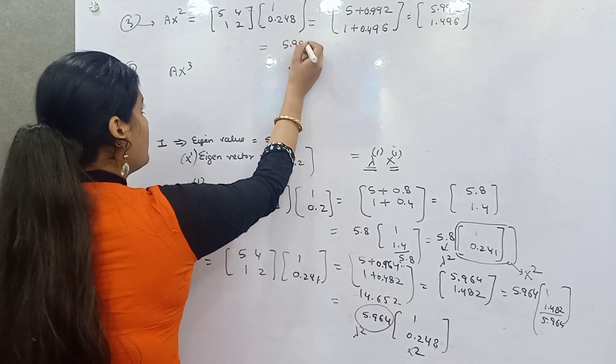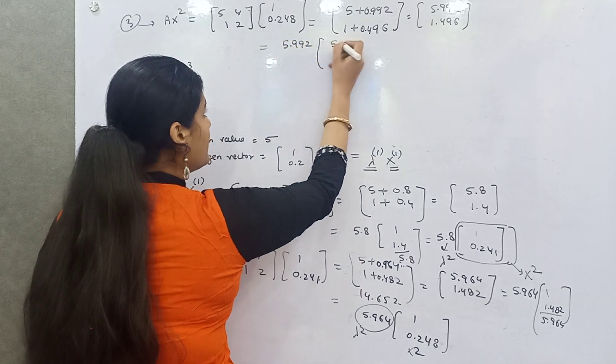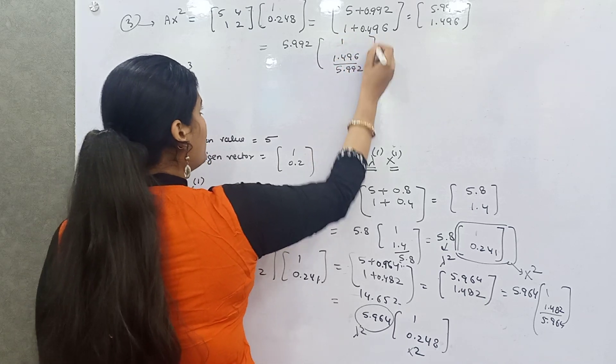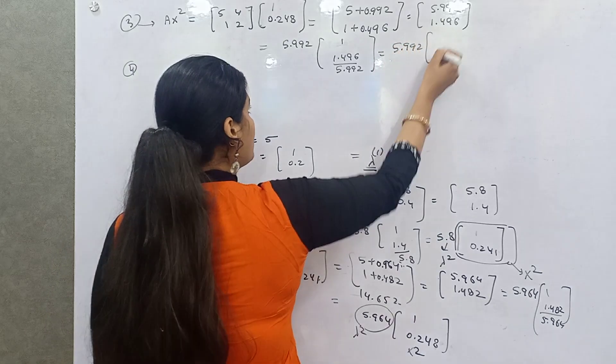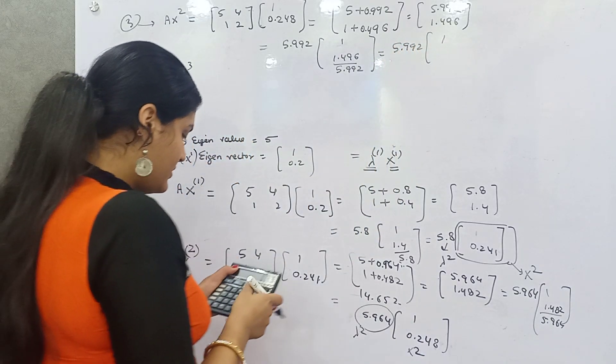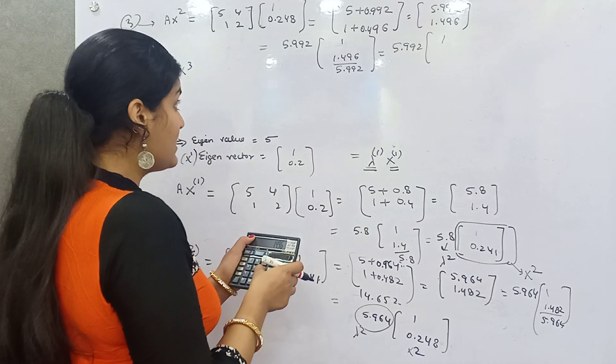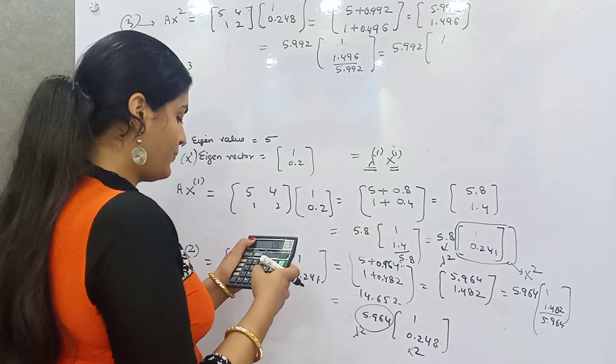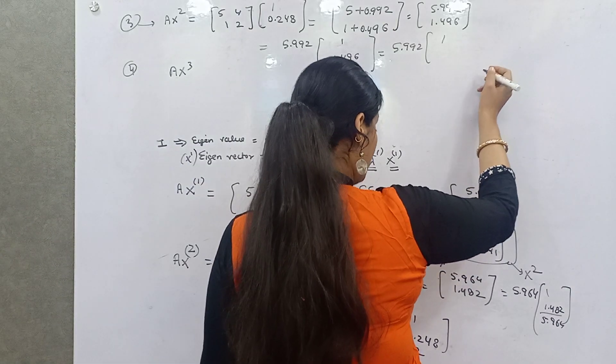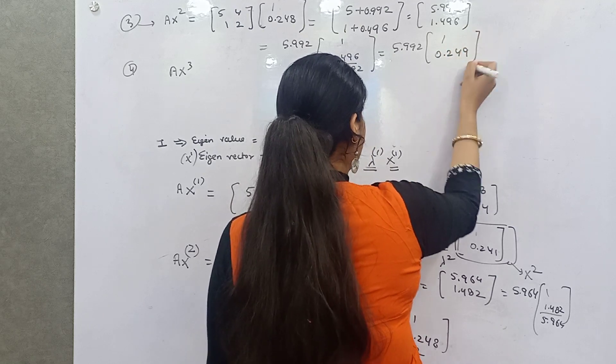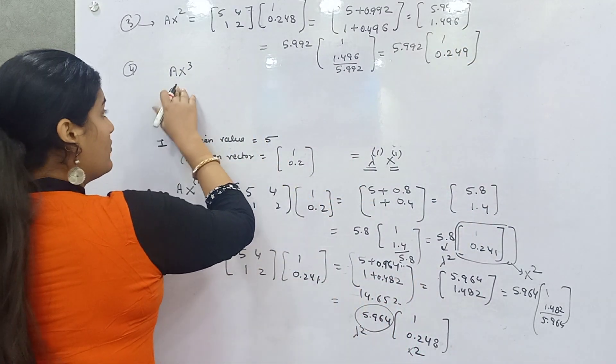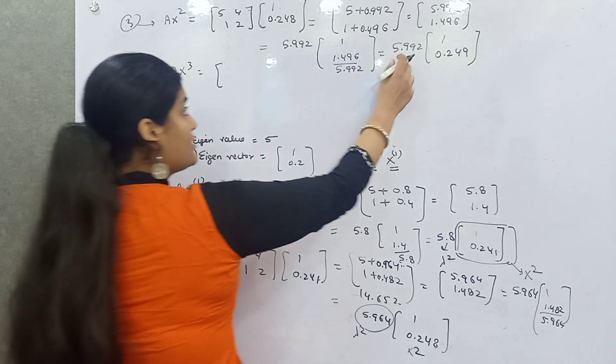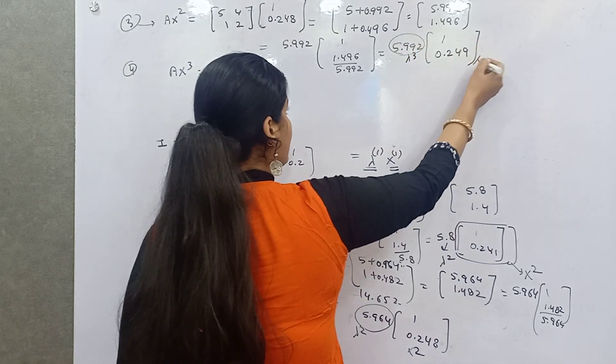Again, take common the first element. This will be 1 and this will be 1.496 by 5.992. If you divide this, 1.496 divided by 5.992, that is 0.249. This is your lambda 3 and this is your X3. For finding out fourth eigenvalue and vector, you need to take AX3.